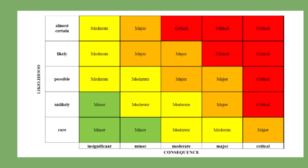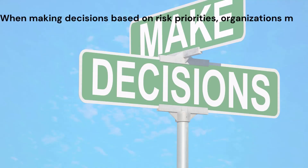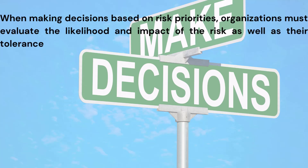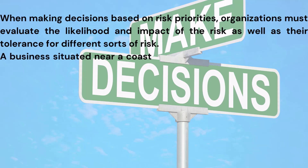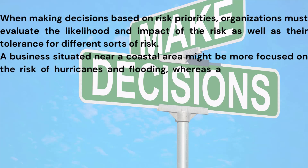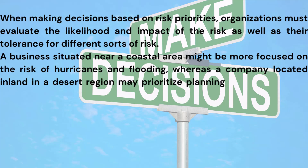A useful approach for ranking risks involves utilizing a risk matrix, where priority is determined by the intersection of the likelihood of occurrence and the impact. This matrix provides a shared language for communicating with management when establishing final priorities. For instance, a situation with both low likelihood and low impact might be categorized as low priority, whereas an incident with high likelihood and high impact would be designated as high priority. Organizations must also consider geographic-specific risks, such as hurricanes for coastal businesses or extreme heat for inland desert companies.